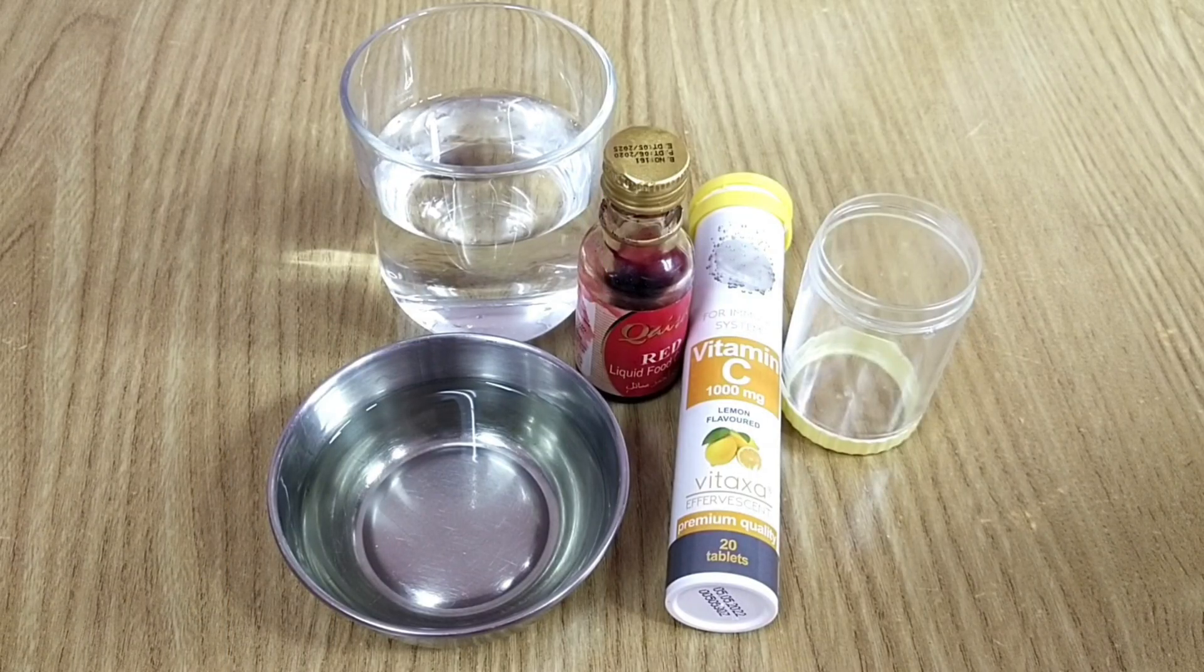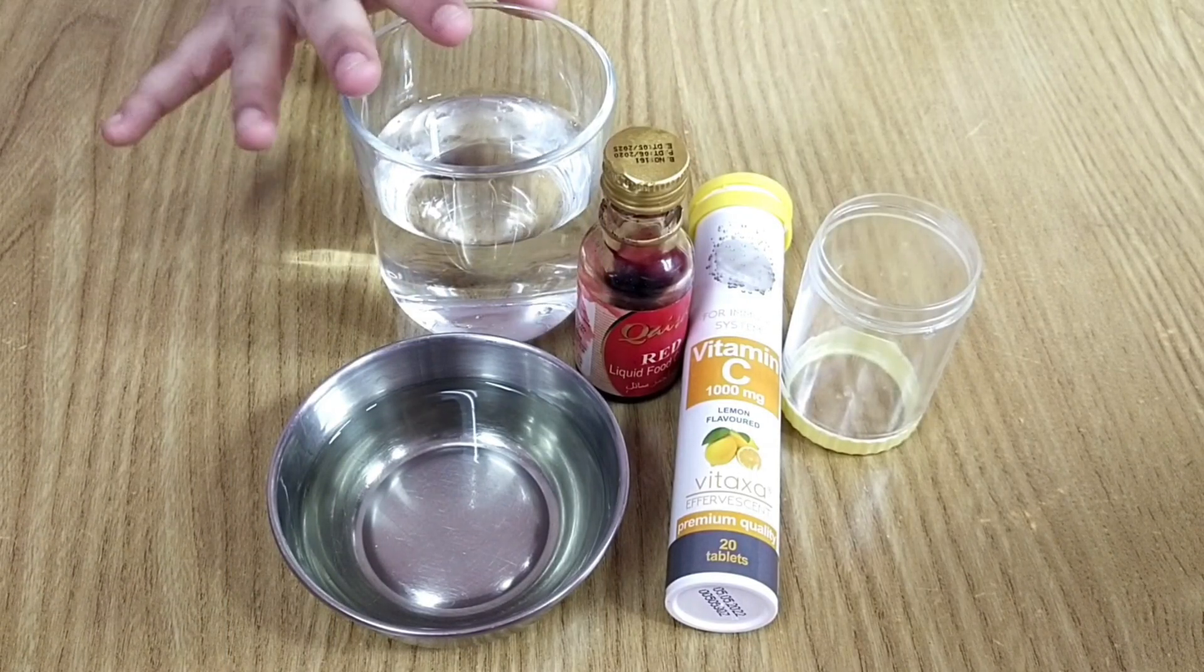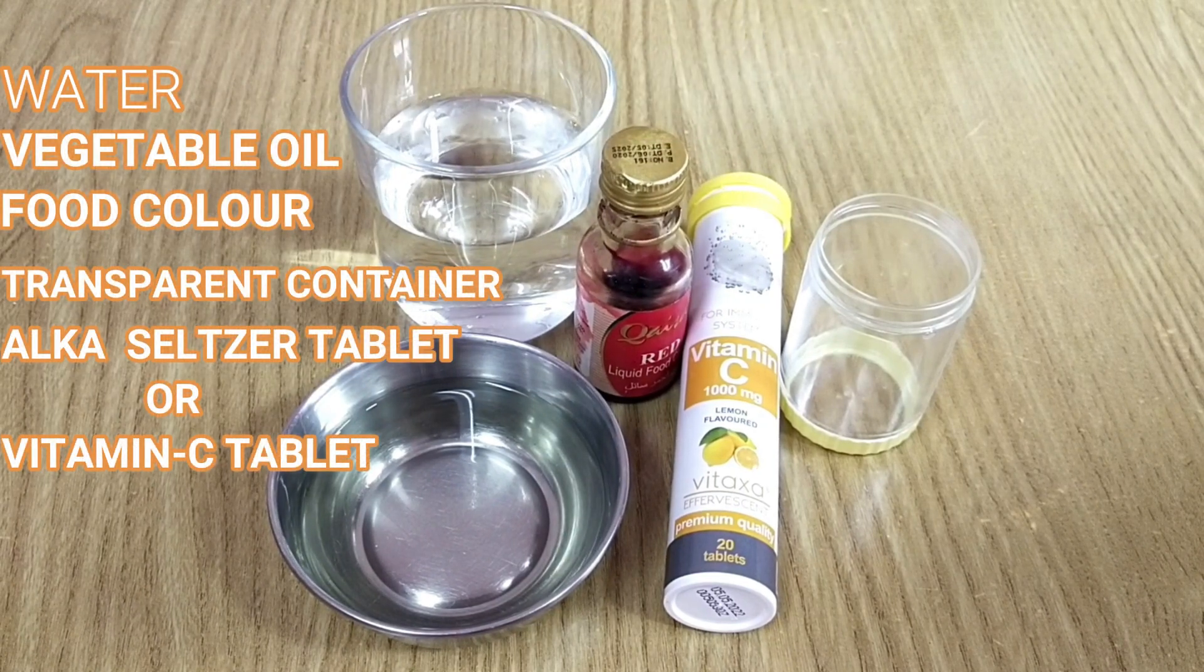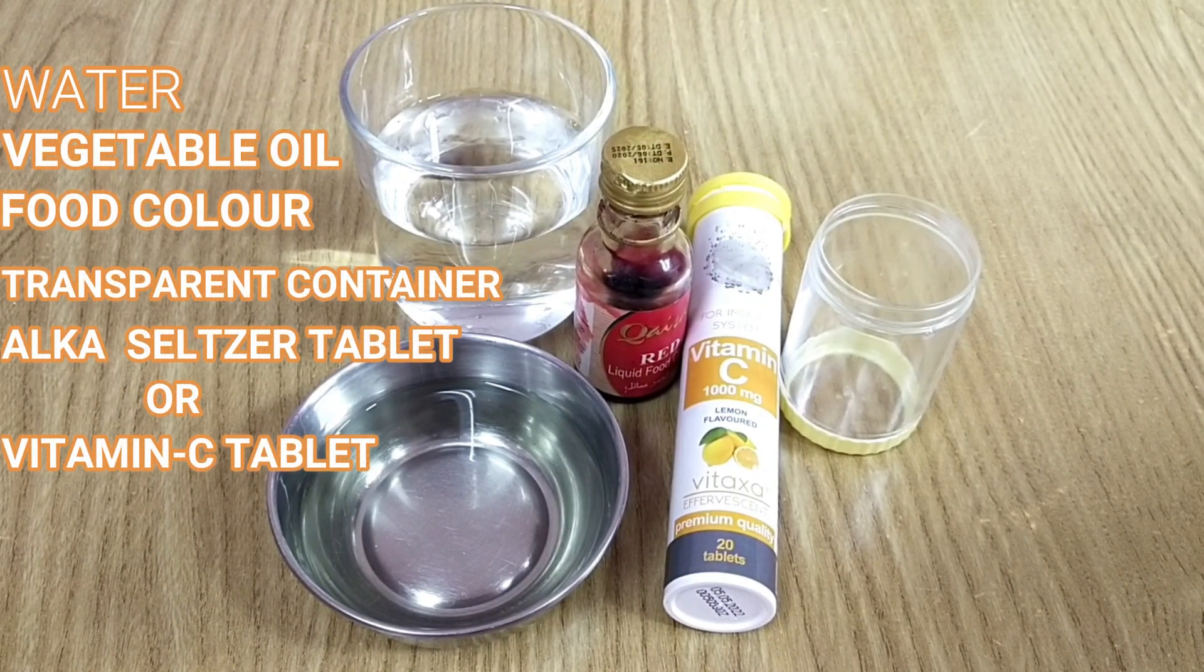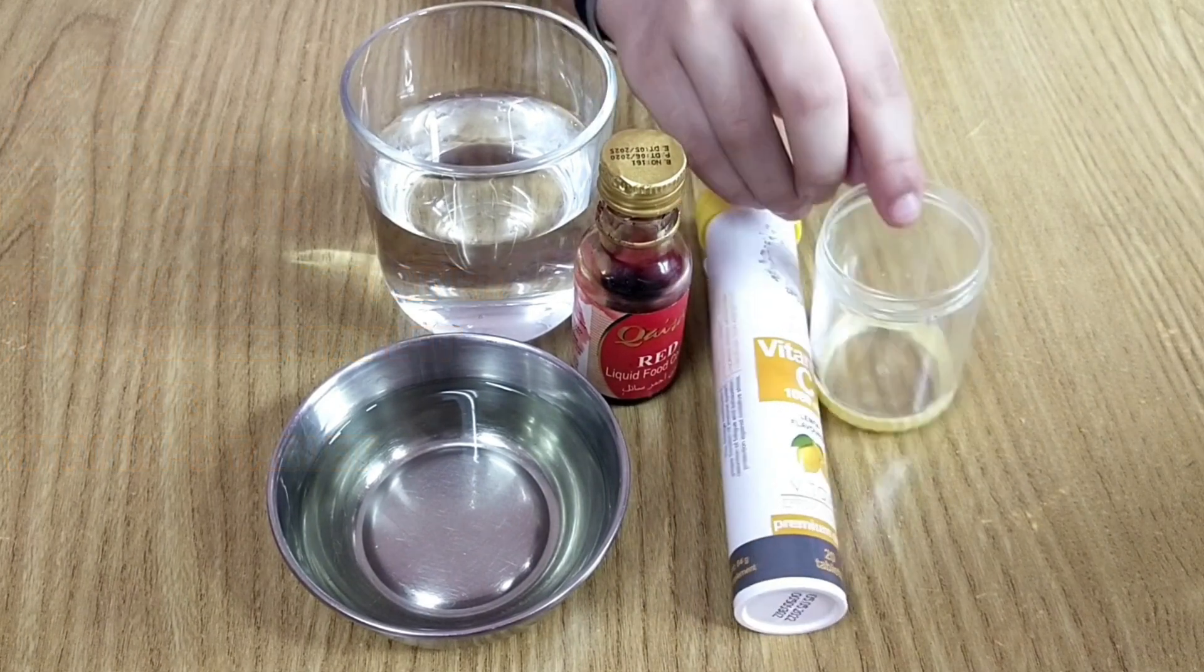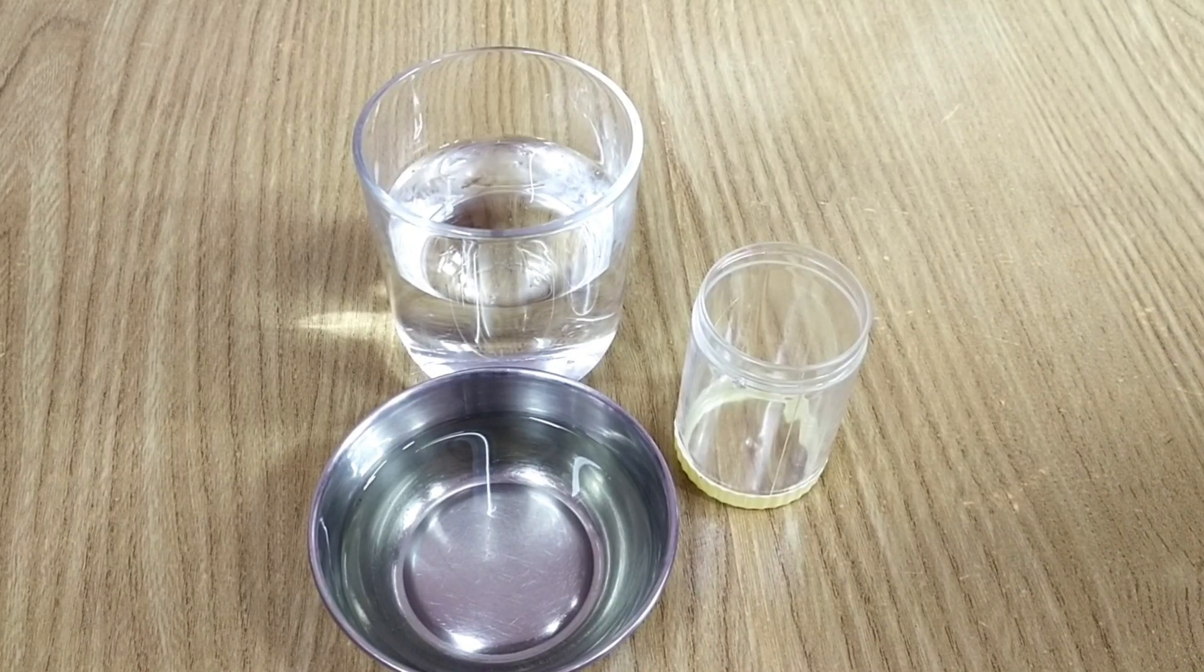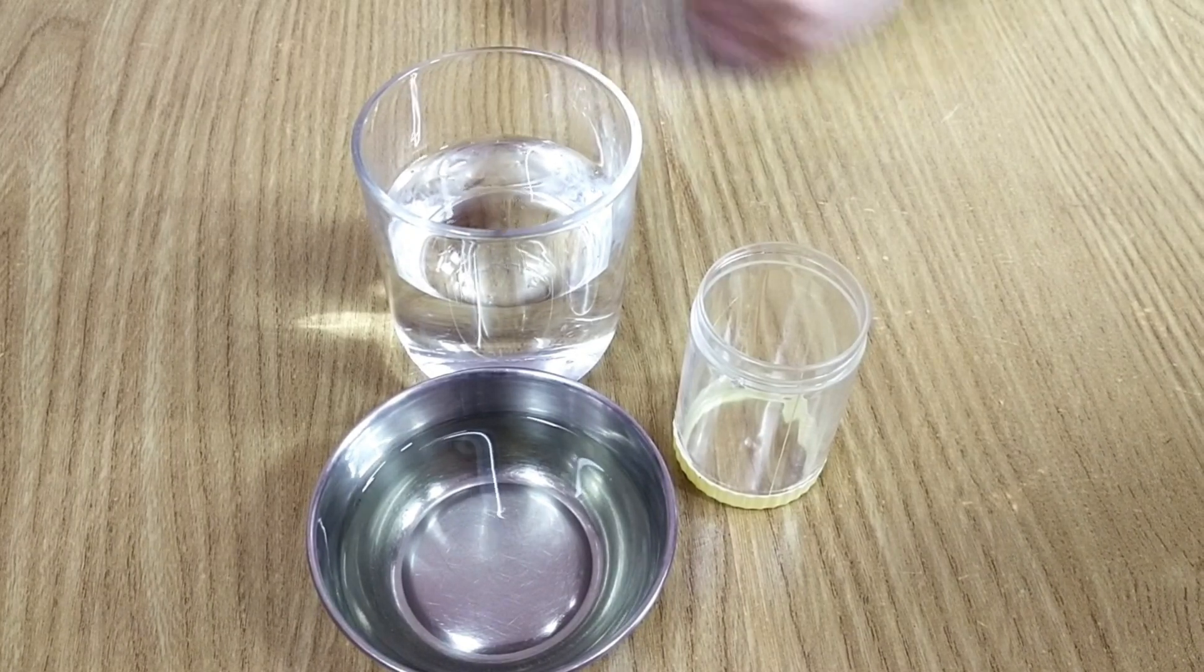Now we are going to make a lava lamp. For this we need water, vegetable oil, food color. You can use Alka-Seltzer tablet. Here I'm using vitamin C tablet and a transparent container. Now let's start making the lava lamp. Fill the container with water.